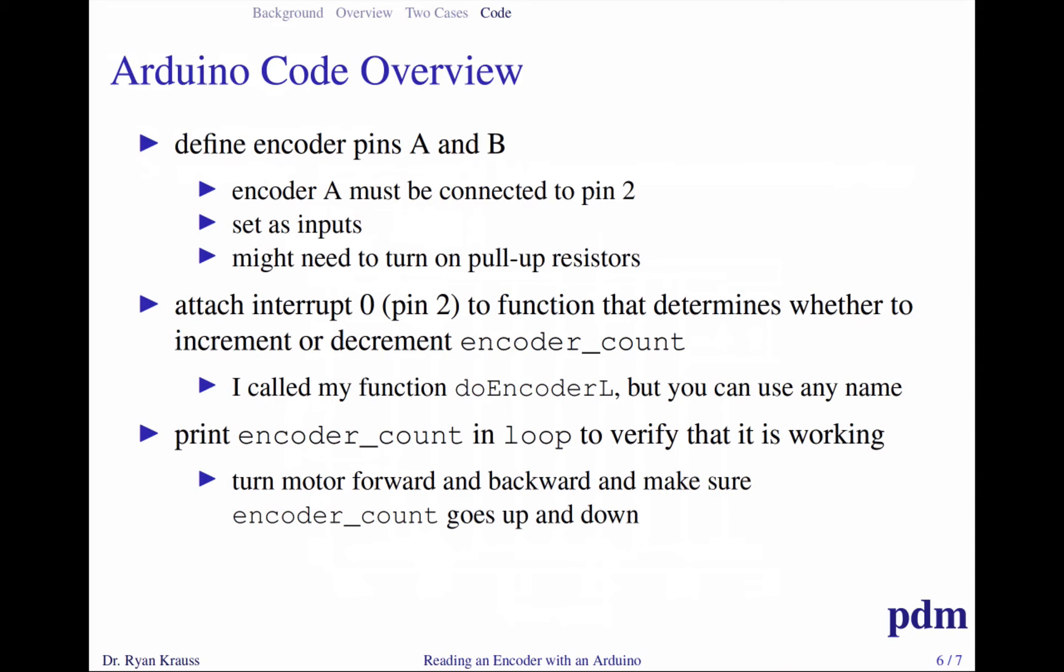I'm going to define my function doEncoderL. I'm going to have an encoder on the left and encoder on the right for my two different wheels of my robot. You can use any name. In my loop function, I'm just going to print my encoder count as a way to verify that this is working. You would probably want to somehow command your motor to turn in one direction for half a second, then stop, then turn the other direction for half a second, and verify that your encoder count is going up and down by printing it to the serial monitor.